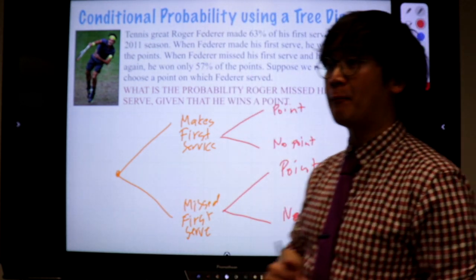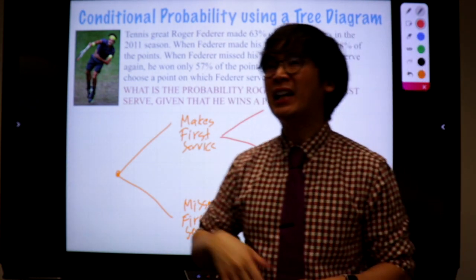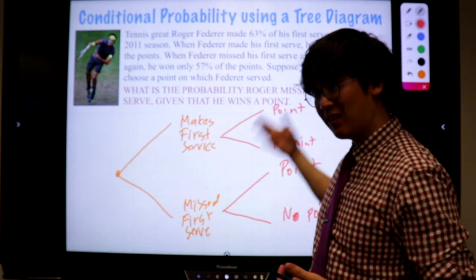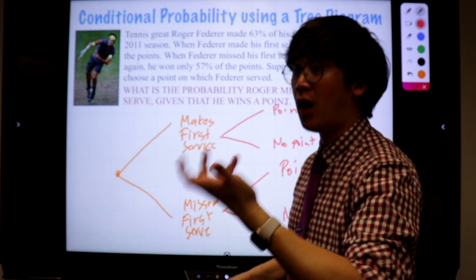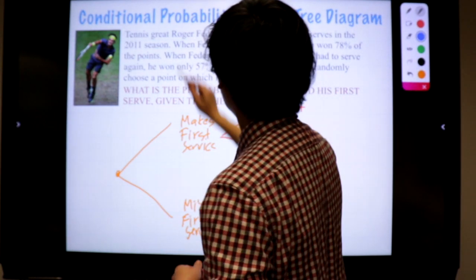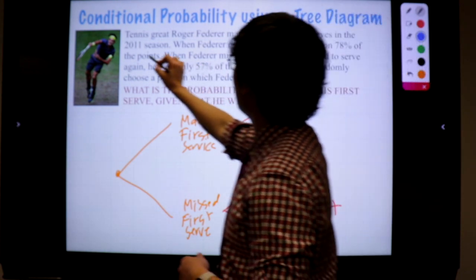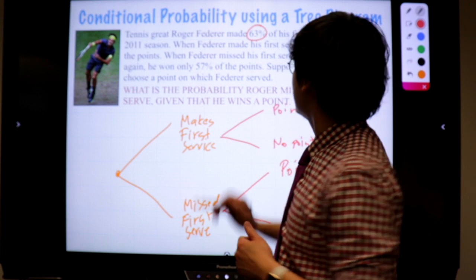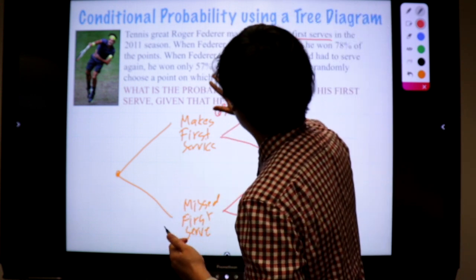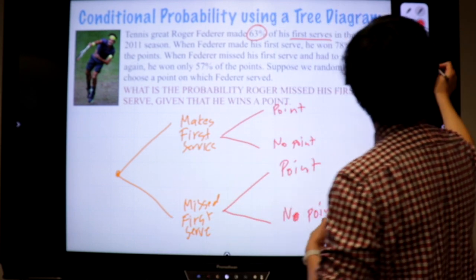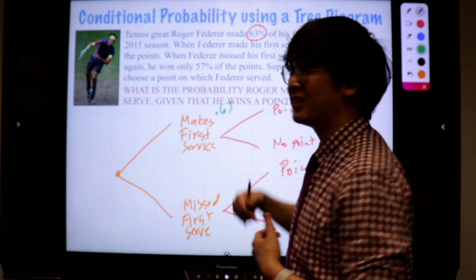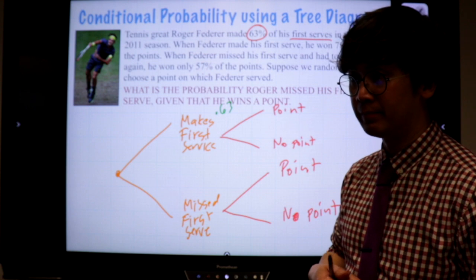Now that we have our tree diagram — it's always this or that, on/off, just two options — let's apply the information. Federer made 63% of his first serves, so in decimal that's 0.63. Making it on the first serve is 0.63. What's the probability he misses the first serve? That's the complement: 1 minus 0.63, which is 0.37.